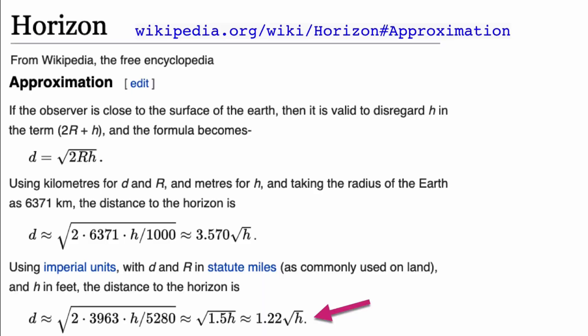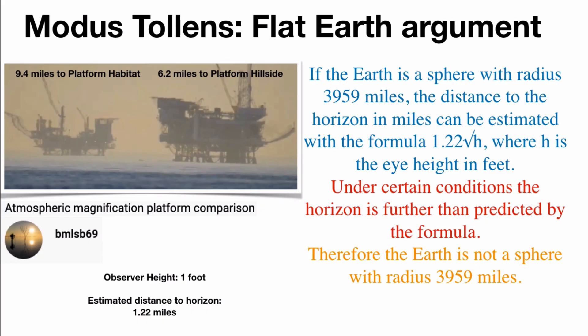So let's take a look at where some of these numbers come from. So in Wikipedia, they've got a nice derivation, just using the data for a globe earth. And technically, geometrically, the horizon should be 1.22 times the square root of h in miles, where h is in feet.